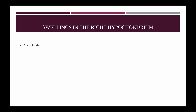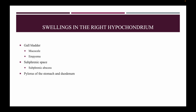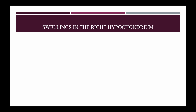In the gallbladder: mucocele and empyema. In the subphrenic space: subphrenic abscess. In the pylorus of the stomach and duodenum: carcinoma, subacute perforation of peptic ulcer. In the hepatic flexure of the colon: intussusception and hypertrophic tuberculosis.